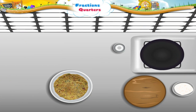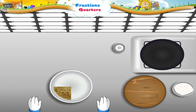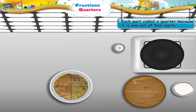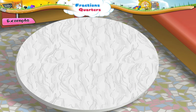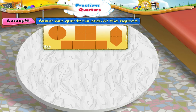Why are you showing me this chapati? Yes, we can also fold the chapati into four parts. Each part is called a quarter because it is one out of four parts. Let us revise what a quarter or a fourth part is. Colour one quarter in each of the figures.